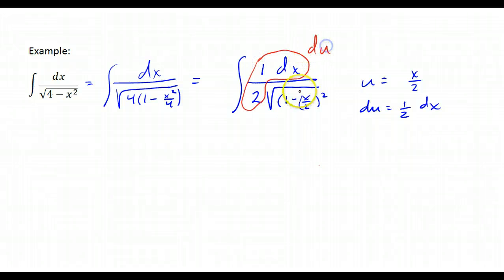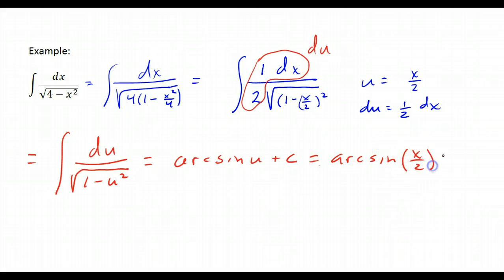So all of that is du, and this becomes the square root of 1 minus u squared, which is what we want. So in terms of u, this is going to be the arc sine of u plus c, which ends up being the arc sine of x over 2 plus c.